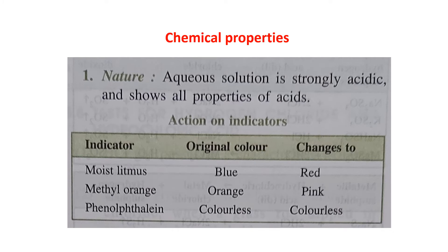Chemical properties of HCl. Nature: aqueous solution is strongly acidic and shows all properties of acids. Action on indicators: HCl changes moist blue litmus to red. The word 'moist' is important — the litmus paper must be moist so that H₃O⁺ ions form and show the acidic property. HCl turns methyl orange from orange to pink, and phenolphthalein remains colorless with HCl.